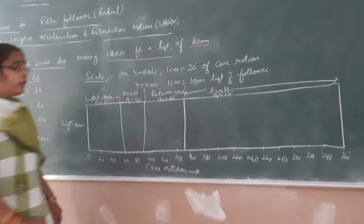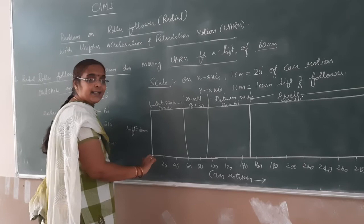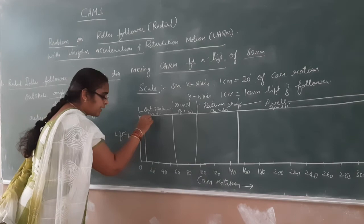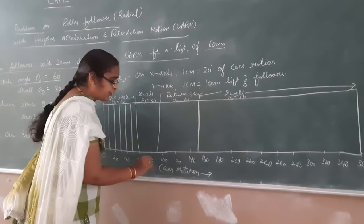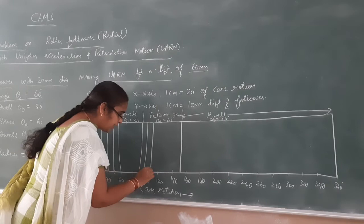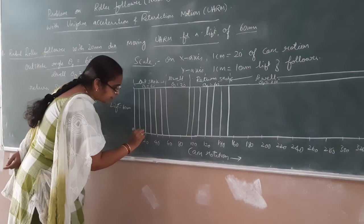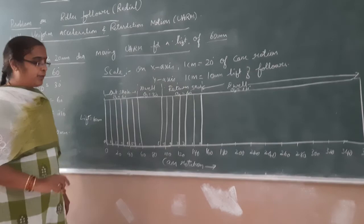Now we are supposed to divide the outstroke region and the return stroke region each into 6 equal parts. The outstroke region is 3 cm, so divide it into 6 parts — at every half centimetre keep a point, giving 6 equal parts. Similarly, the return stroke region should also be divided into 6 parts at every half centimetre. Name the outstroke points as 0, 1, 2, 3, 4, 5, 6, and the return stroke points as 6, 5, 4, 3, 2, 1, 0.